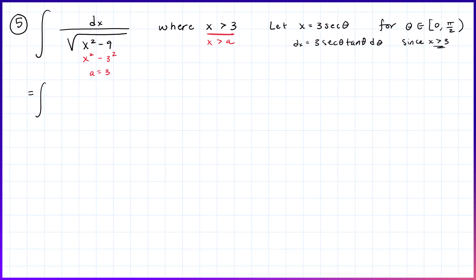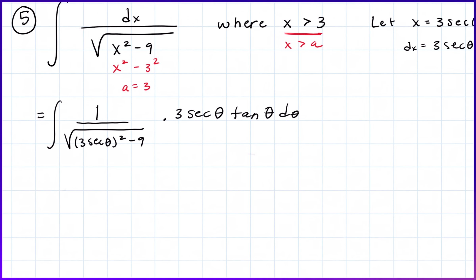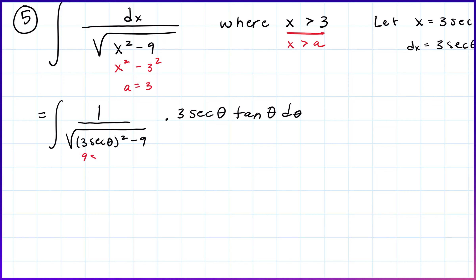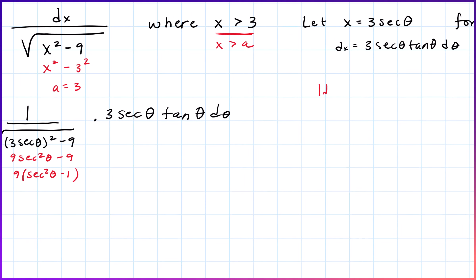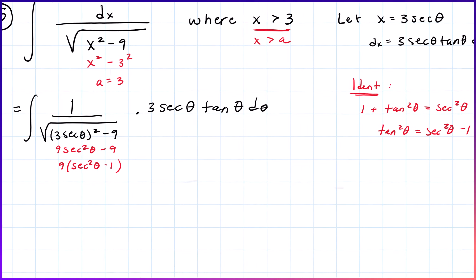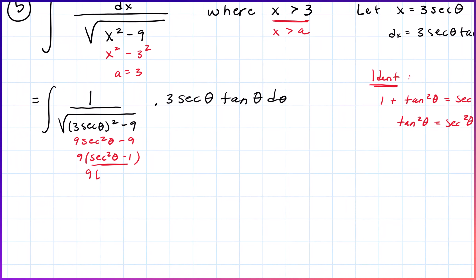This becomes the integral of 1 over the square root of (3 sec θ)² minus 9, times 3 sec(θ) tan(θ) dθ. The whole reason for that substitution is so the square root simplifies: (3 sec θ)² minus 9 equals 9 sec²θ minus 9, which factors as 9(sec²θ minus 1). Using the identity tan²θ = sec²θ minus 1, this becomes 9 tan²θ under the square root.